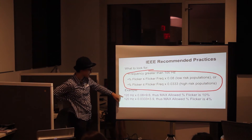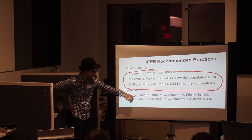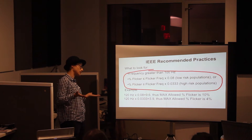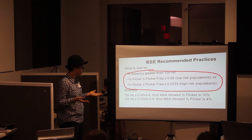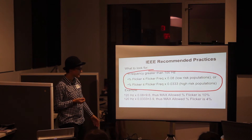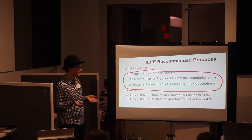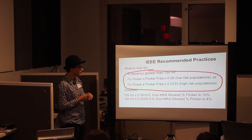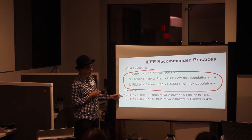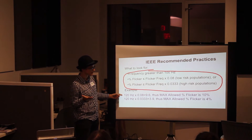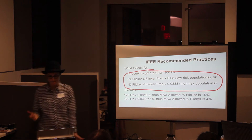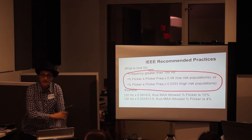To apply the recommendation: take your frequency and multiply it by the appropriate factor. For an AC LED at 120 hertz, multiply by 0.08 to get 9.6, rounded up to 10%. So according to this new recommended practice, for 120 hertz with a low-risk population, the allowed percent flicker is 10%. But this must be used in combination with percent flicker — you can't just do one or the other.